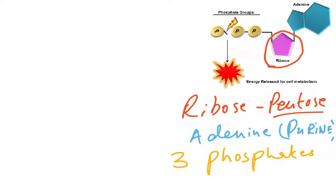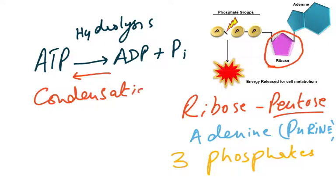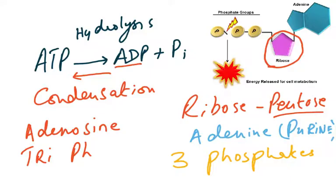This ATP is hydrolyzed to ADP plus inorganic phosphate. This is hydrolysis, and the opposite is condensation. The structure of ATP is a phosphorylated nucleotide, which is why it's called adenosine triphosphate. It's broken down into adenosine diphosphate and can even be broken down to adenosine monophosphate. This energy-rich bond is broken up and energy is released.